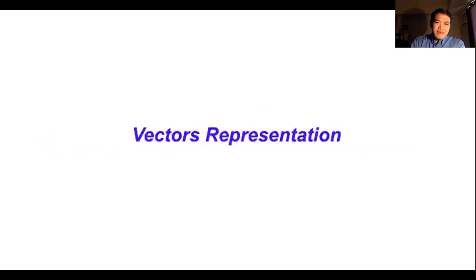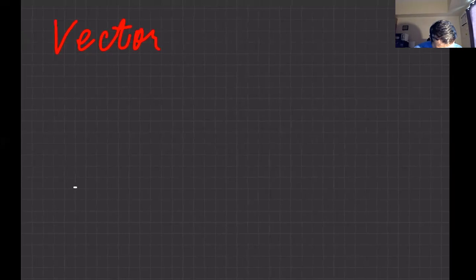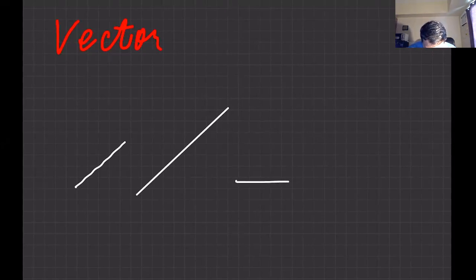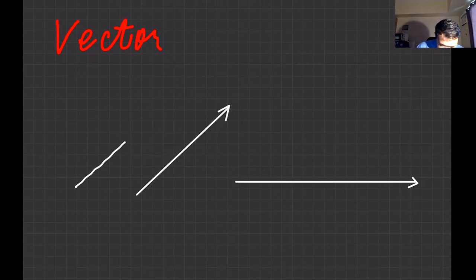We usually represent vectors as arrows. So vectors are represented by arrows — you can use a ruler when you draw them. For example, this is vector A, this is vector B, this is vector C. A vector has direction, so you need to specify the tip of the arrow — that is the arrowhead.